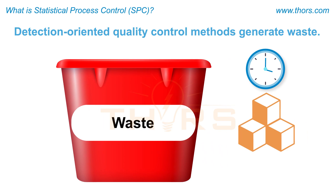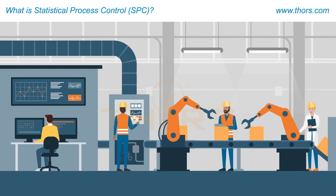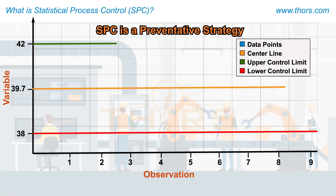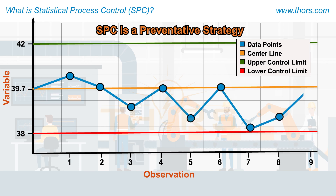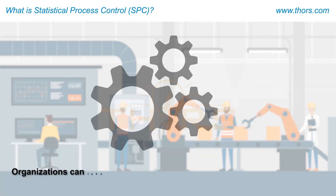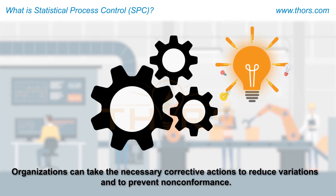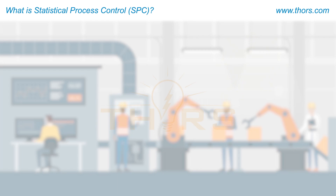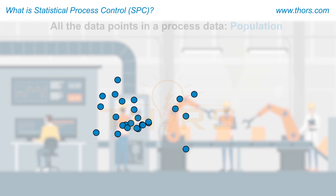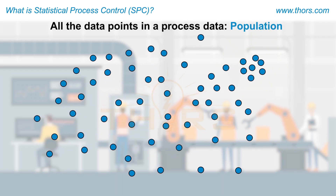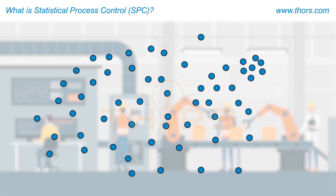SPC, on the other hand, is a preventative strategy that aims to predict the occurrence of variations by interpreting the process data, so that organizations can take the necessary corrective actions to reduce variations and to prevent non-conformance. In SPC, all the data points in a process are taken as the population.